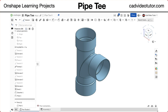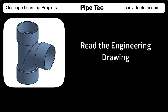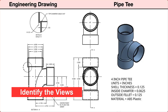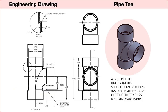Now you are ready to begin the project. In this segment, we'll read the engineering drawing for this pipe tee. Let's start by identifying the views provided in the drawings. First, there is an isometric view showing the pipe tee as a three-dimensional pictorial. Next, three orthographic views.